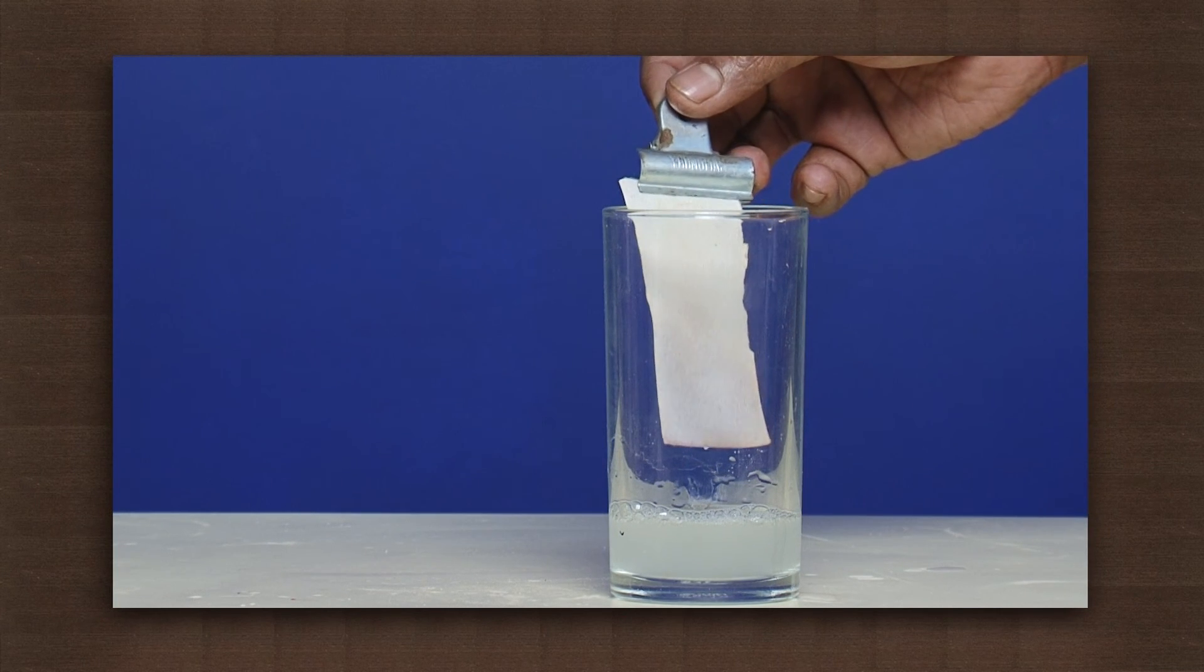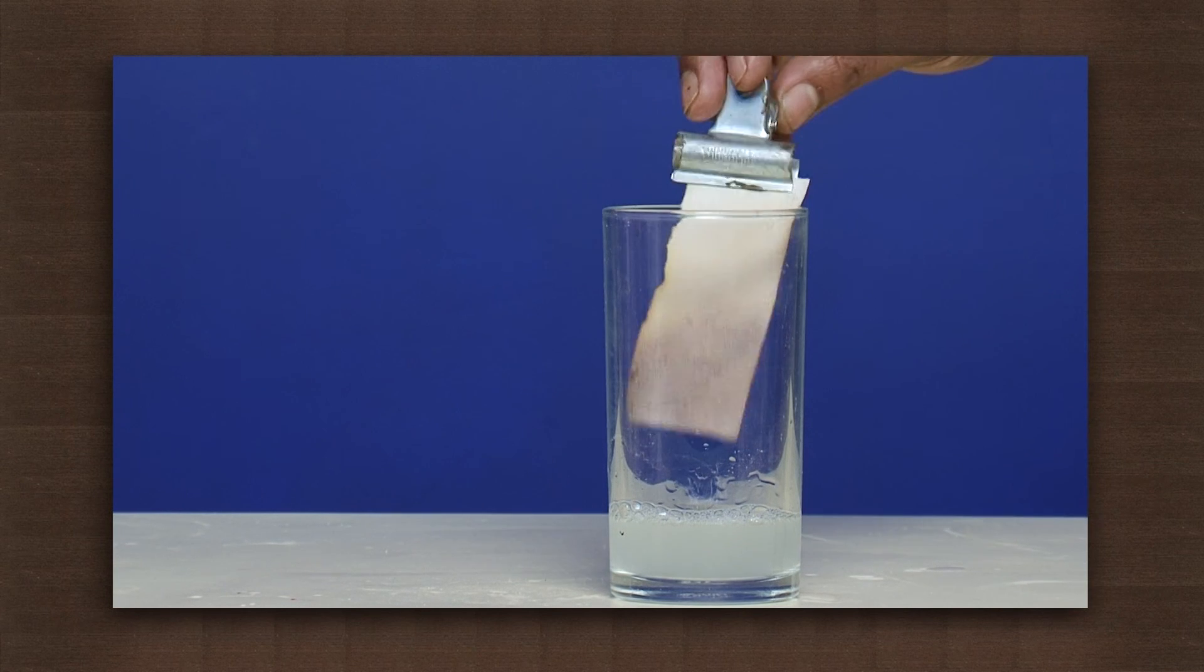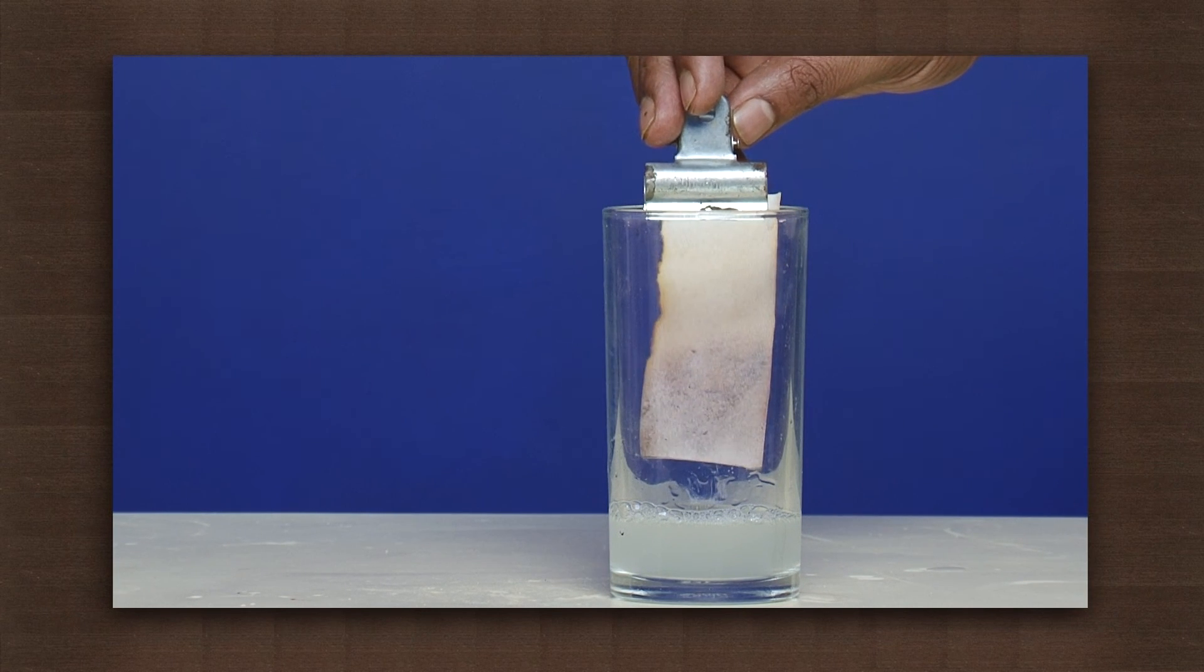Let us test our starch iodide paper in this gas. It works as the paper turns bluish black. Check.